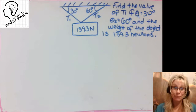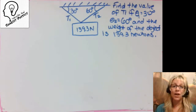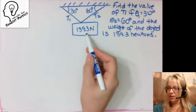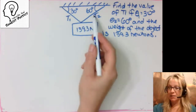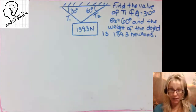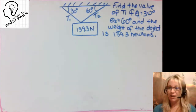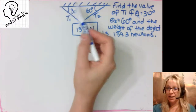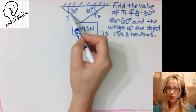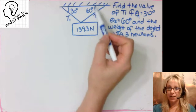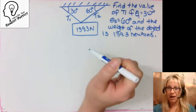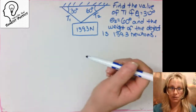Okay, as usual in any force problem, we are going to get started drawing our free body diagram. What we're dealing with here is just a box suspended by two ropes or cables, and we want to find the value of tension 1 if theta here is 30 degrees, and our angle here is 60 degrees, and the weight of this box is 139.3 Newtons.